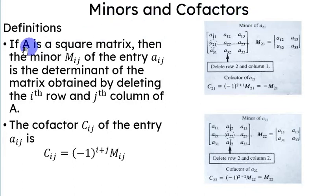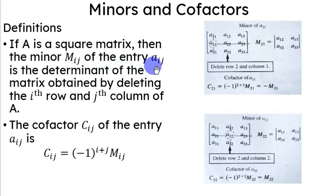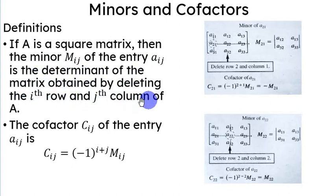If A is a square matrix, then the minor M sub ij of the entry A sub ij is the determinant of the matrix obtained by deleting the i-th row and the j-th column of A.